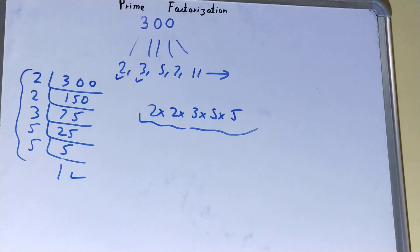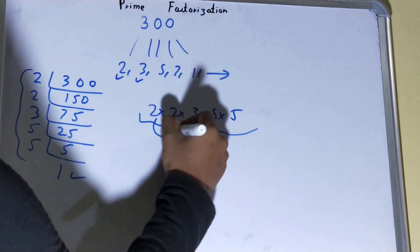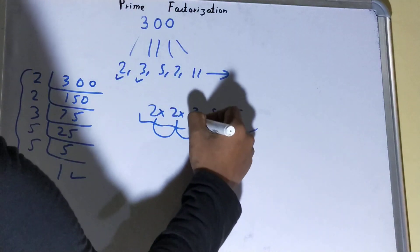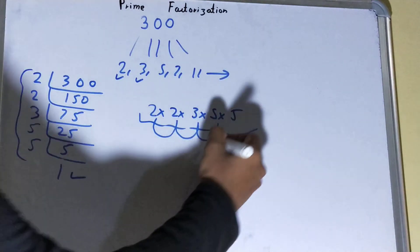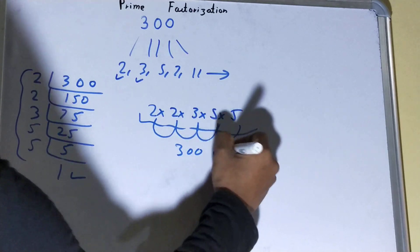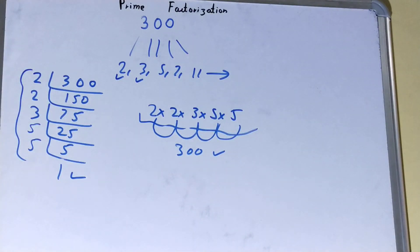If you want to check whether it is right or not, you can multiply it. 2×2 is 4, 4×3 is 12, 12×5 is 60, 60×5 is 300. If you are getting the number 300 back again, then your answer is totally right. If you are not getting it, then you need to recheck your calculation.